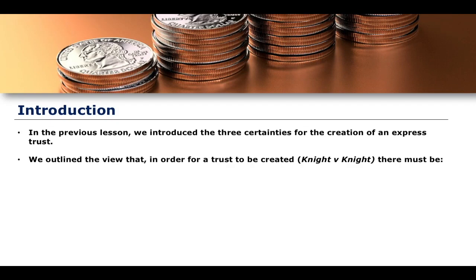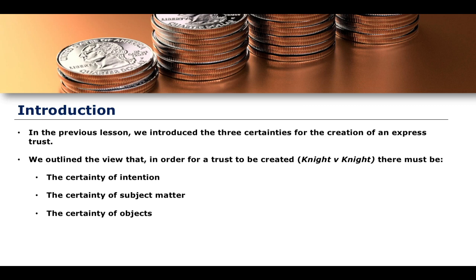We outlined in the previous lesson from Knight v Knight 1840 that in order for an express trust to be created — not a constructive or resulting trust, but an express trust — there must be a certainty of intention, a certainty of subject matter, and a certainty of objects. It has to be clearly certain that the individual placing property on trust intended to create a trust, and we must be able to clearly define and delineate what that property is and who the beneficiaries are.